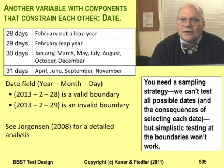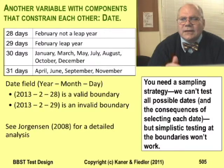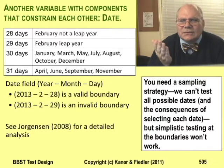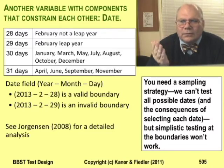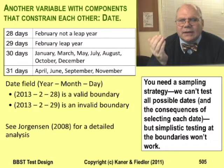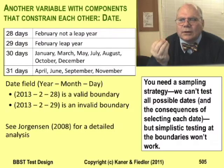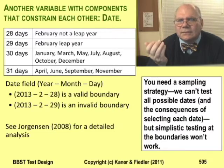Dates provide another common example of non-independent variables. A date includes the year, the month, and the day of the month — you can't test these as if they were independent, not competently. All pairs type testing doesn't help you reason these combinations out at all. Instead, you have to learn about dates and design tests focused on the meaning of the variables and the way they can go wrong. Jorgensen analyzes date fields in significant detail.